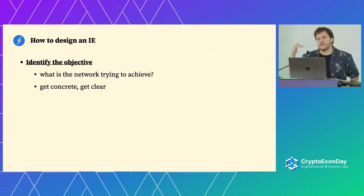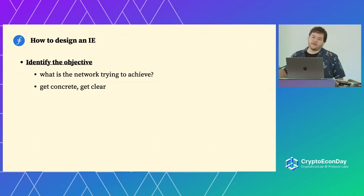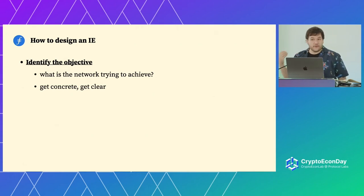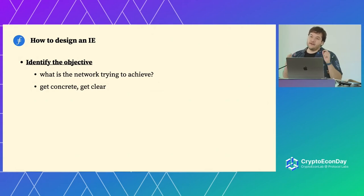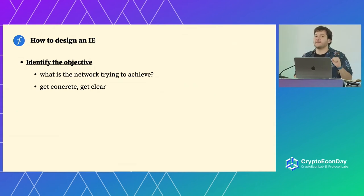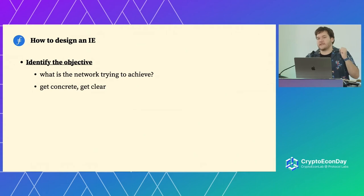How to design an IE — I'll go through a few steps and then give a Saturn example. First, you want to identify the objective. Before thinking about incentives or rewards, what are you trying to do? What are you trying to convince a group of people to work together towards? Get super concrete in terms of the objectives and super clear in the description because it's going to matter when you start constructing incentives. In the Saturn example, what we're trying to do is get a community of participants to provide sub-second, CDN-quality resolution of content dissemination around the world.